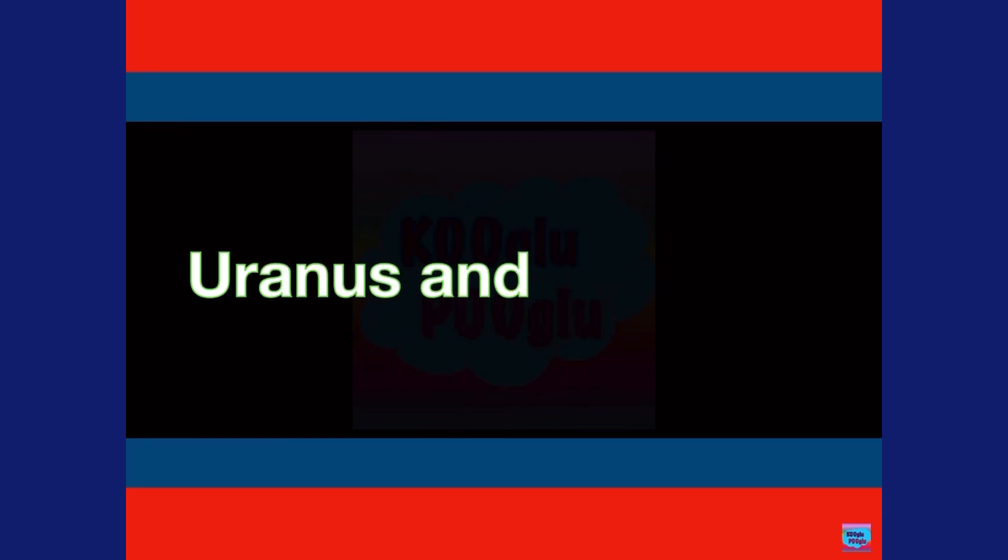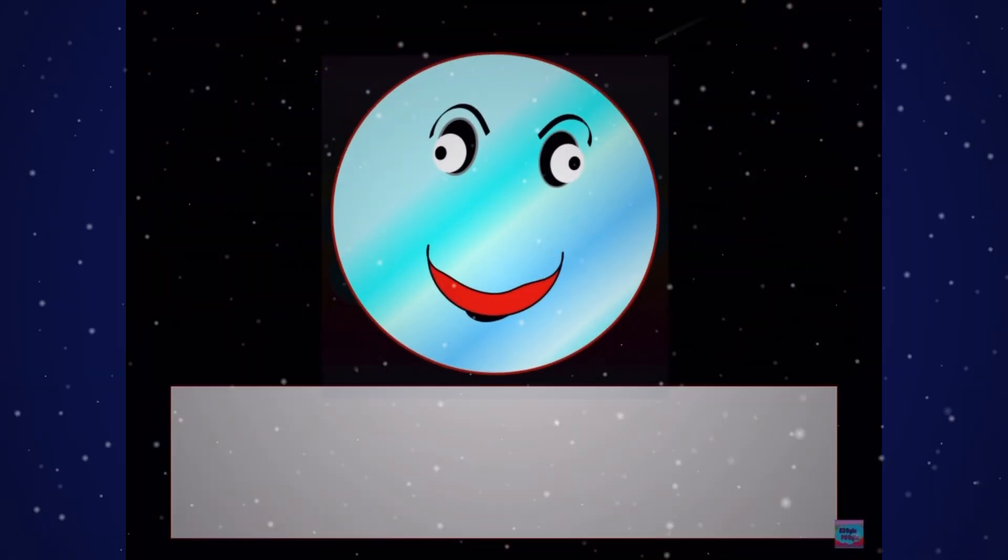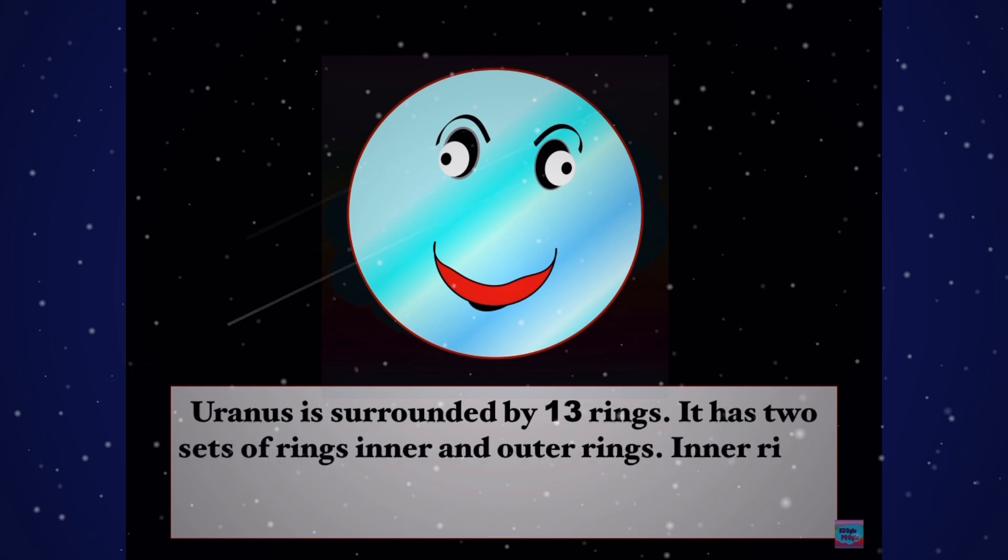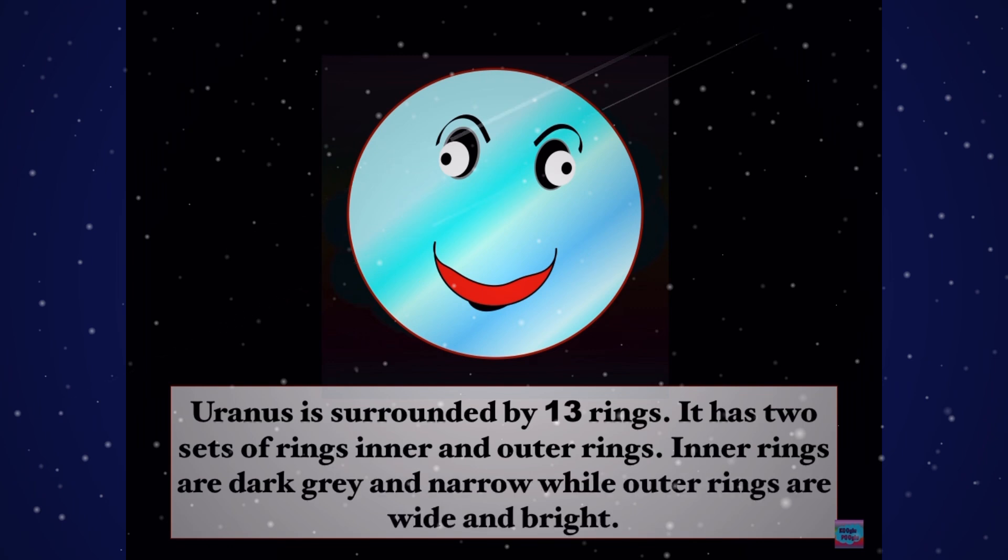Uranus and its rings. Uranus is surrounded by 13 rings. It has two sets of rings, inner and outer rings. Inner rings are dark, gray, and narrow, while outer rings are wide and bright.